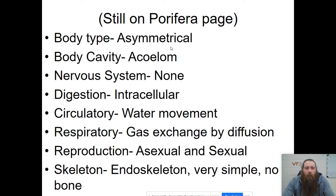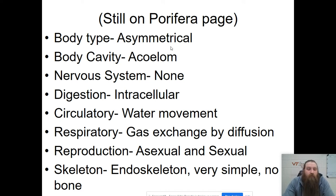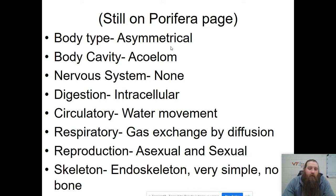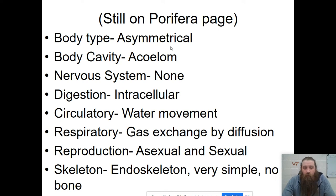As far as their body type is concerned, they are asymmetrical. They do not have a coelom — they are acoelomates as far as their body cavity is concerned. They have no nervous system, they have a nerve net, but no brain, no nervous system. The digestion that they undergo is intracellular, so they don't have a digestive system — they just digest their food in their cells.